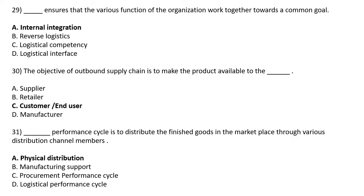DASH ensures that the various functions of the organization work together towards a common goal — Option A: Internal Integration, Option B: Rewards Logistic, Option C: Logistical Competency, Option D: Logistical Interference. The correct answer is Option A: Internal Integration.